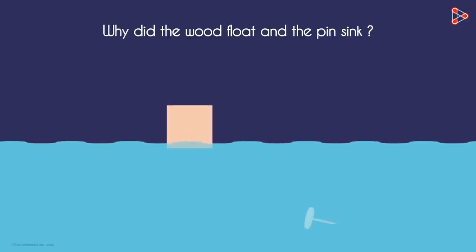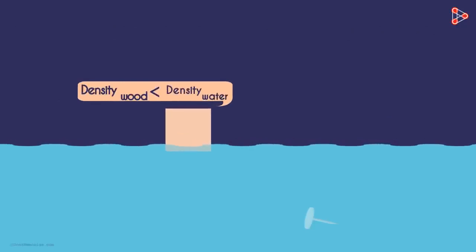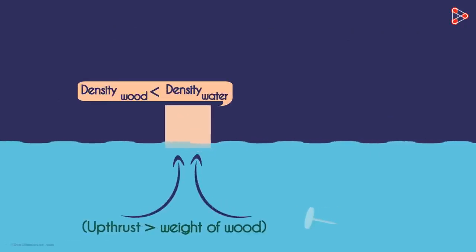The wood floated on water because the density of the wood is lesser than the density of water. Hence the upthrust of water on the wood is greater than the weight of the wood. Hence it floated.